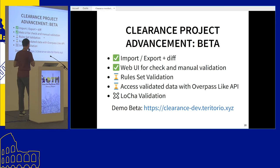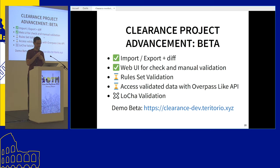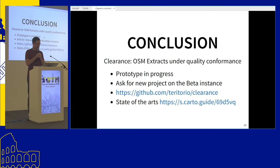Still missing and the next big challenge is local change validation — it is not implemented yet, but it is a very interesting part. For example, one of the first reported cases is a bakery removed and then recreated just beside it. The project is in progress, with a beta instance and demo already set up with projects on tourism, train stations, and others for testing and feedback.